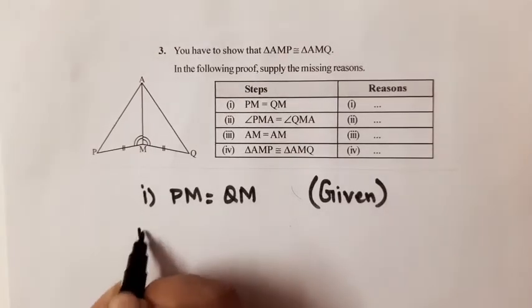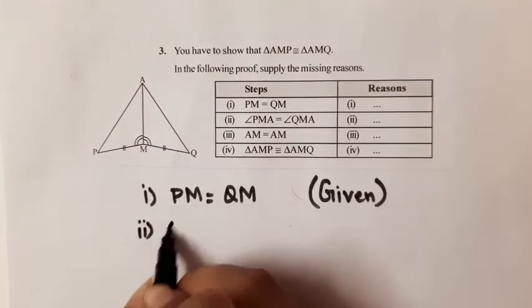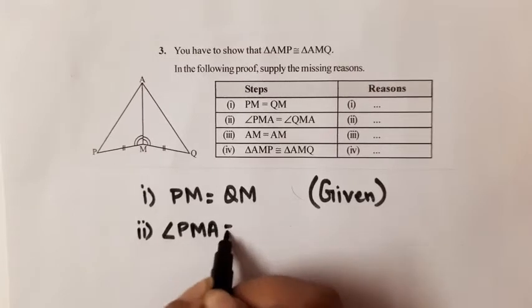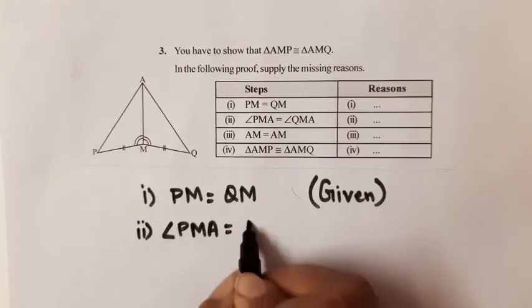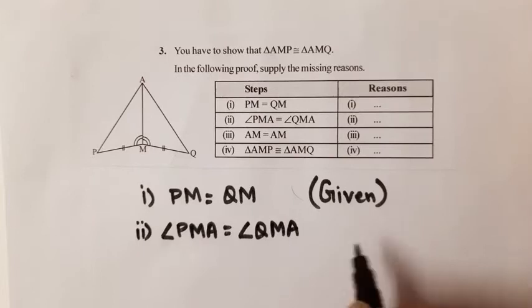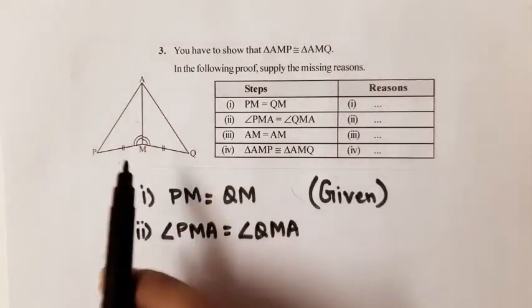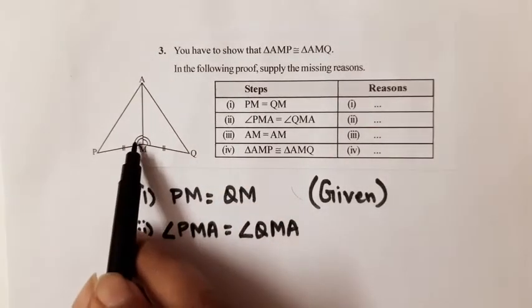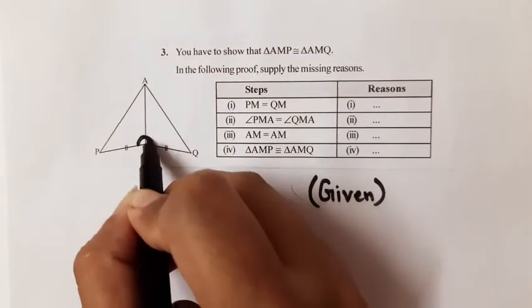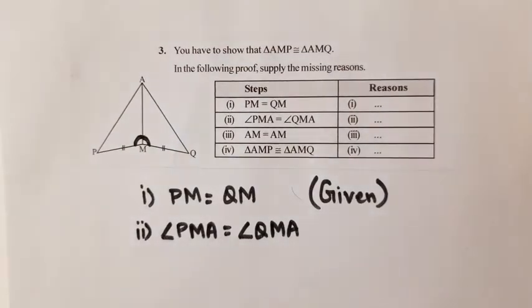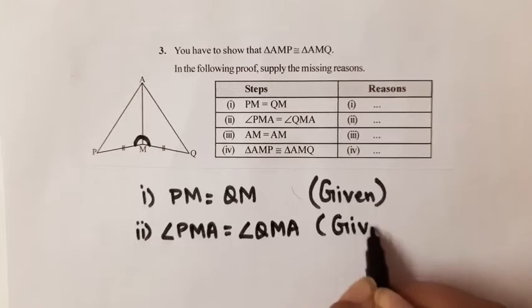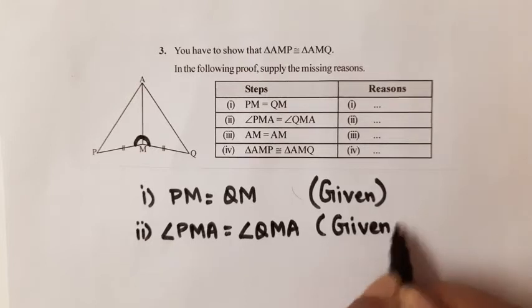Second part: angle PMA is equal to angle QMA. So how can we say that? Because it is also given to us in the question. So the reason is: given.